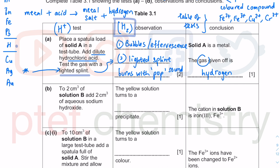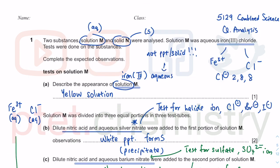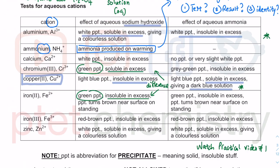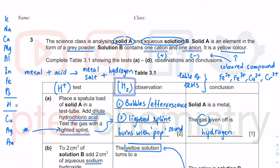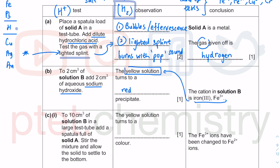Our conclusion is that the cation is iron 3 plus, Fe3+. Iron 3 plus in solution is a yellow solution. When you add sodium hydroxide to it, iron 3 plus will give you a red brown precipitate. From the table: Fe3+ with sodium hydroxide gives red brown precipitate, insoluble in excess NaOH.